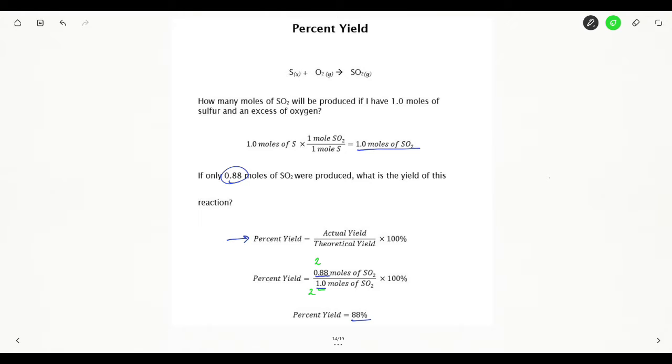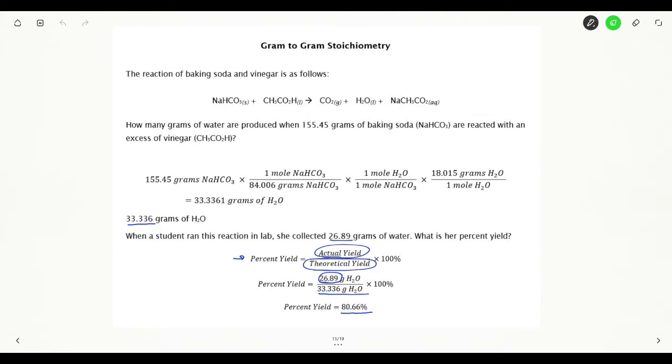Now I need to be careful with my 1.0 moles of sulfur dioxide. That's a number I actually calculated. But as I did in a previous video, this should have two sig figs. So I know my sig figs are correct. Therefore my percent yield should have two sig figs and there it does with 88%.